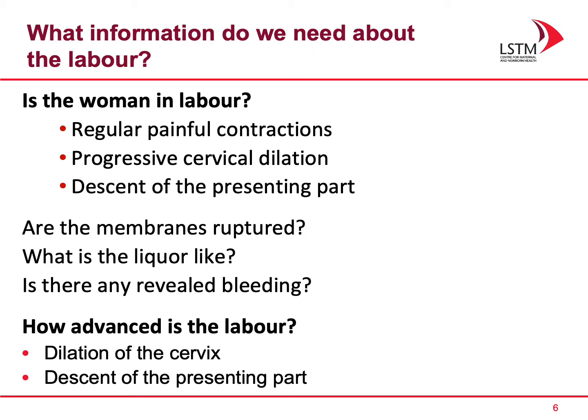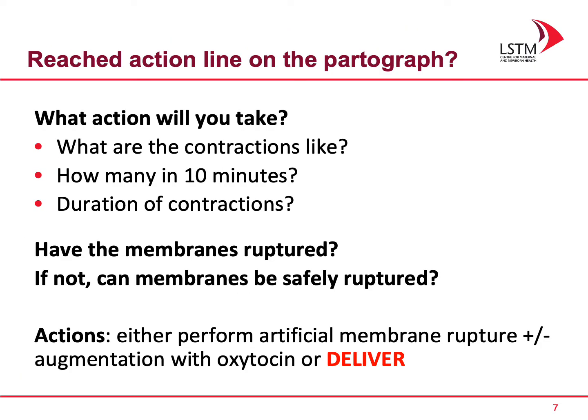We also need to know how advanced the labour is — the dilation of the cervix and the descent of the presenting part. We need to know whether she has reached the action line on the partograph. If she has, you need to think about what action you will take. You need to know what the contractions are like: how many in 10 minutes and their duration.